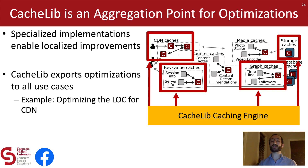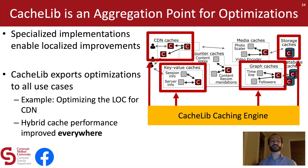We've actually seen examples of when this has happened. There was an example where the CDN team came to the CacheLib team with some ideas about how to optimize the large object cache — they wanted additional write buffers and more complex eviction policies. The CacheLib team implemented this, and what we saw was an improvement in hybrid cache performance across multiple use cases. Now, this is not to say that CacheLib can handle every use case — we do see some examples of use cases that have been hard to migrate, due to incompatibility with the CacheLib API or the requirement of certain features such as advanced data structures not currently supported. Nonetheless, CacheLib has become the de facto standard for new caching use cases at Facebook.